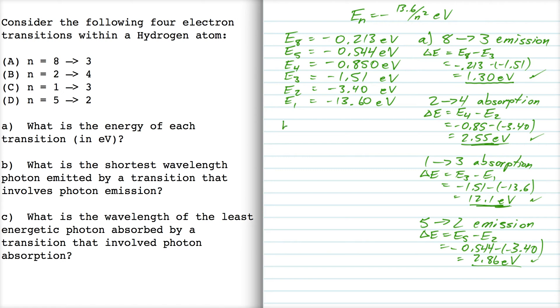Now part B, let's see, the shortest wavelength emitted by a reaction that involves emission. So the reactions that involve emission are here and here. Which one of these is going to have a shorter wavelength? Well, it's going to be the one with the higher energy, which is here.